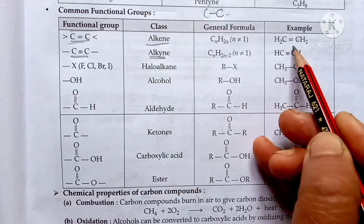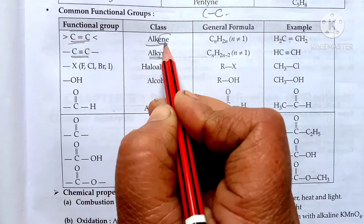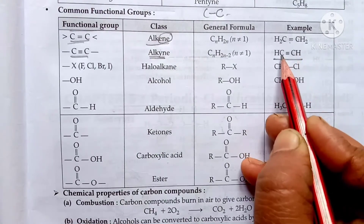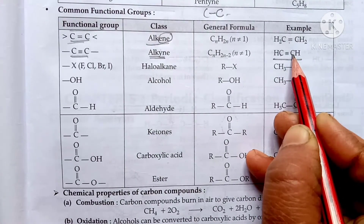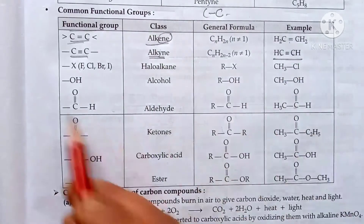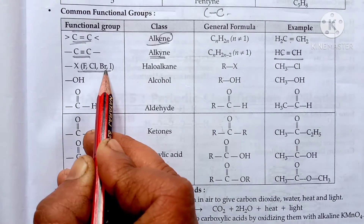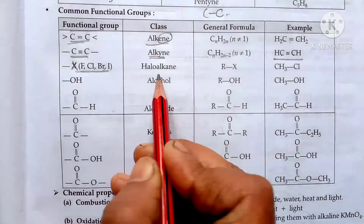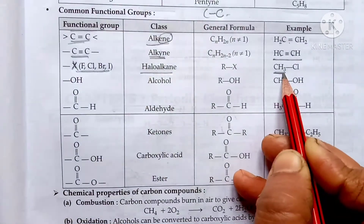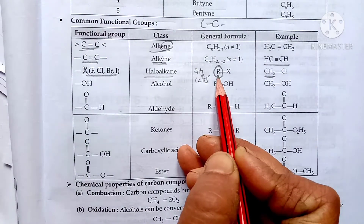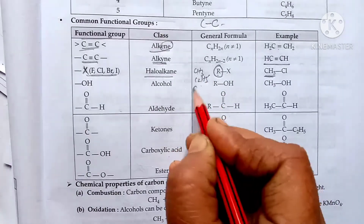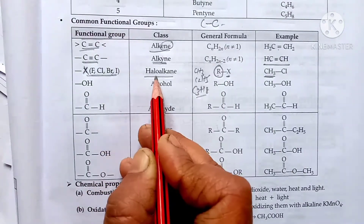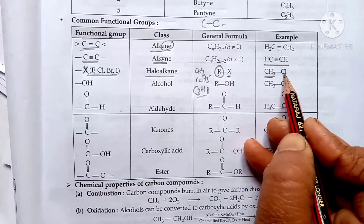Examples of alkenes include ethene. Examples of alkanes include methane and ethane. Halogens — fluorine, chlorine, bromine, iodine — are group 17 elements, generally represented as X. When a halogen is attached to a carbon chain, it is called a haloalkane. The R group represents an alkyl group such as CH3, C2H5, or C3H8.